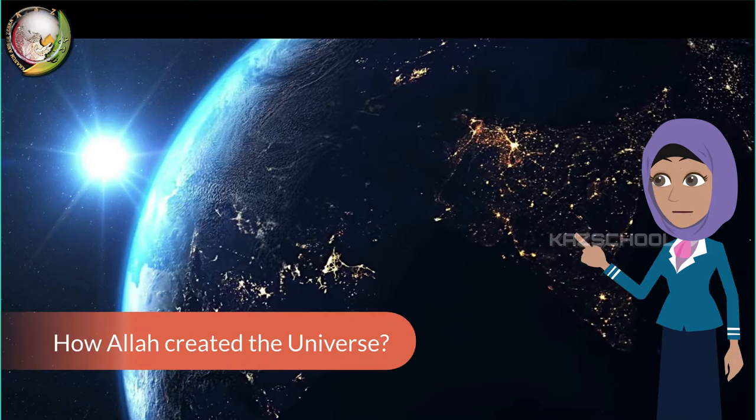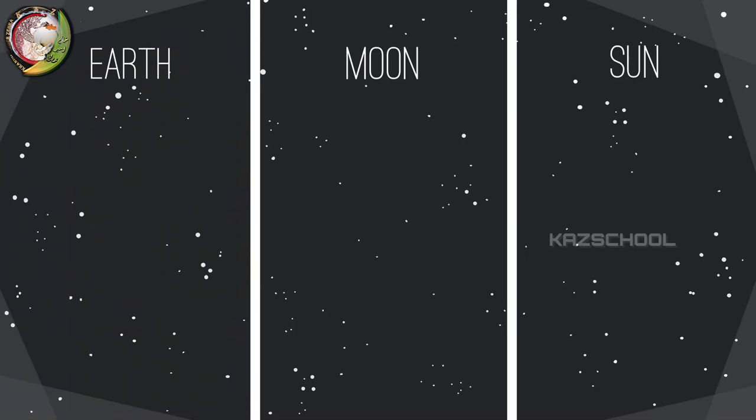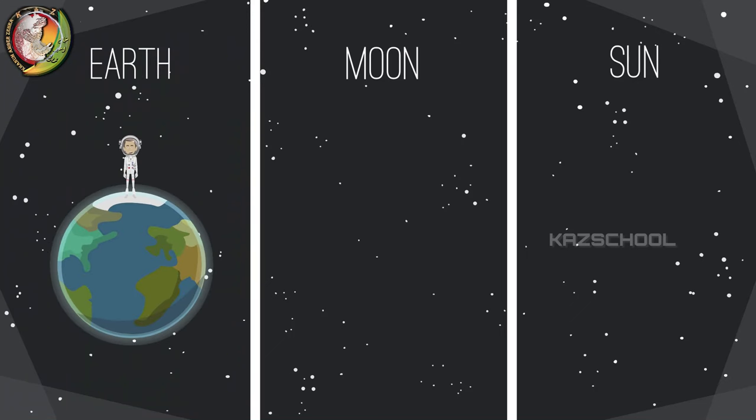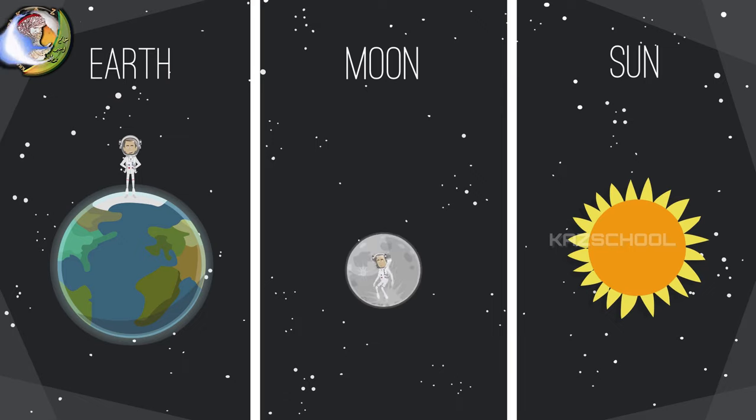How Allah Created the Universe. Long, long ago, there was no earth, no sky, no sun or moon. There was darkness everywhere.